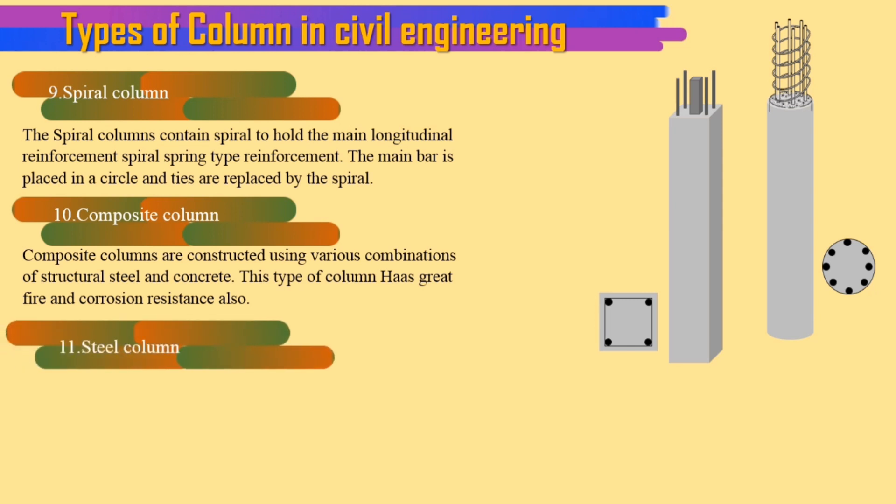11. Steel column. Steel columns are made by steel. These columns are used in aircraft manufacturing warehouses, indoor shipyards.